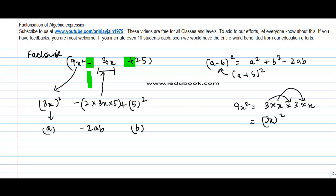2 into 3 gives me 6. 6 into 5 is 30. 30 into x gives me 30x, which is this. So this equation can be rightly written as a square minus 2ab plus b square.